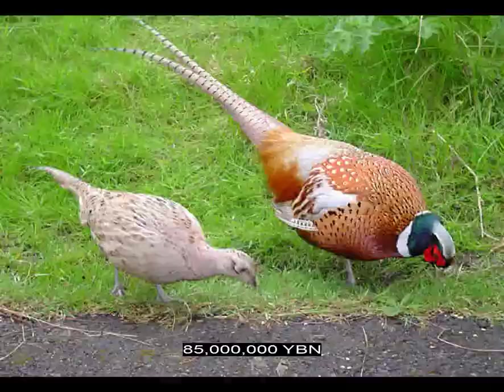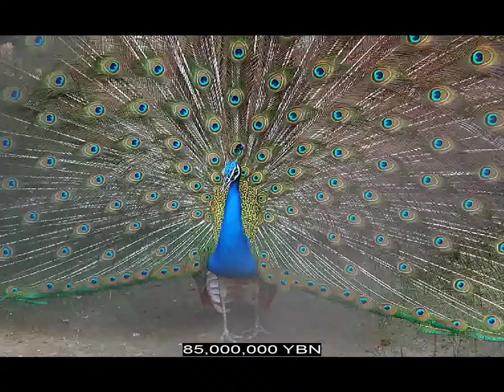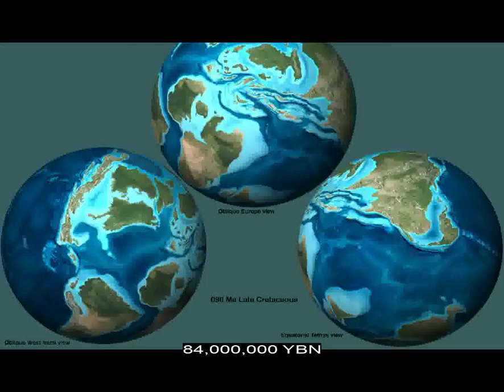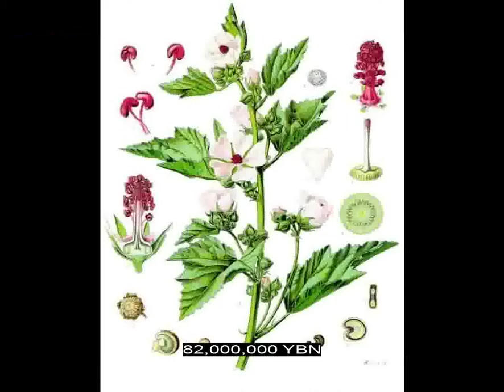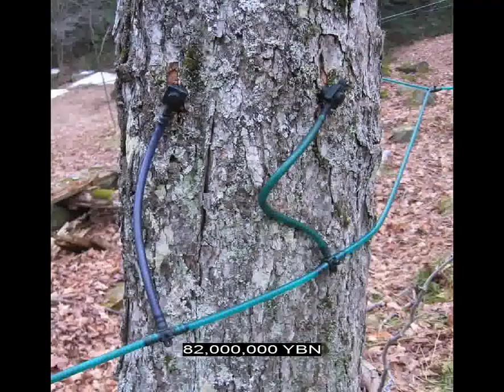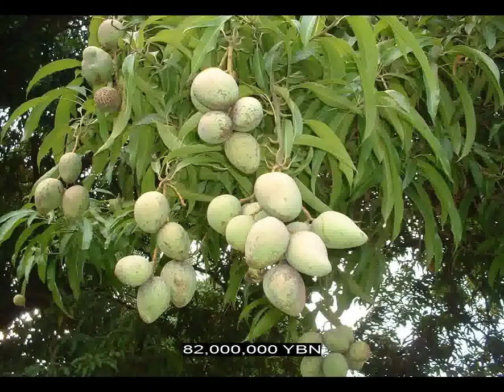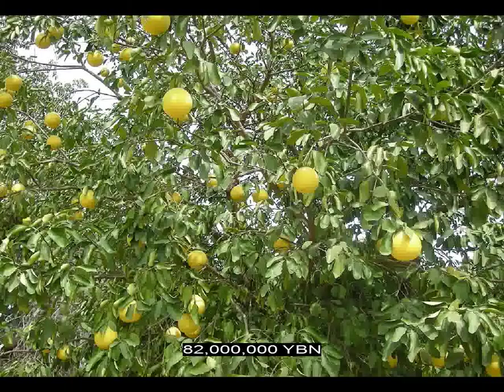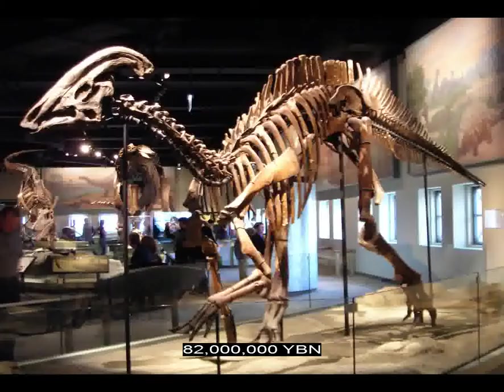Birds Galliformes evolve — chicken, turkey, pheasant, peacock, quail. Birds Anseriformes evolve — ancestor of waterfowl: ducks, geese, and swans. The ancestor of all placental mammals, Laurasiatheria, evolves. The Rocky Mountains start to form. Rosids Malvales evolve — ancestor of okra, marshmallow, durian, cotton, balsa, and cacao. Rosids Sapindales evolve — ancestor of maple, lychee, mahogany, cashew, mango, pistachio, and the citrus trees: orange, lemon, and grapefruit. Ornithopods hadrosaurs — duck-billed dinosaurs.